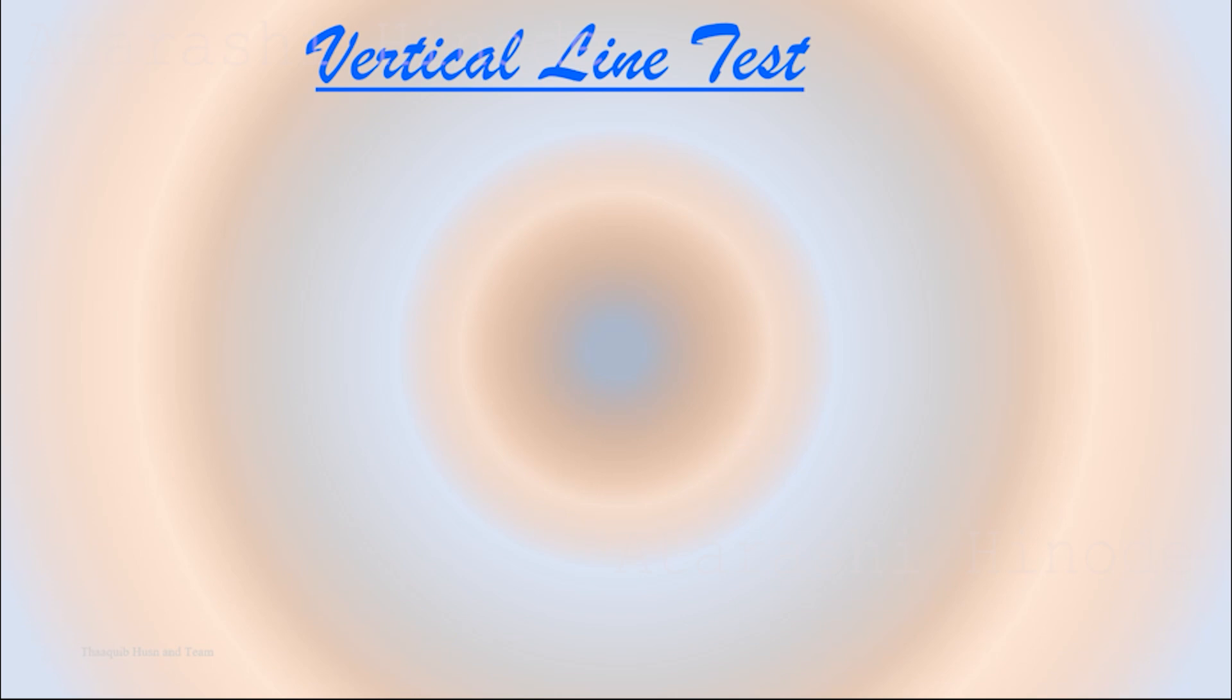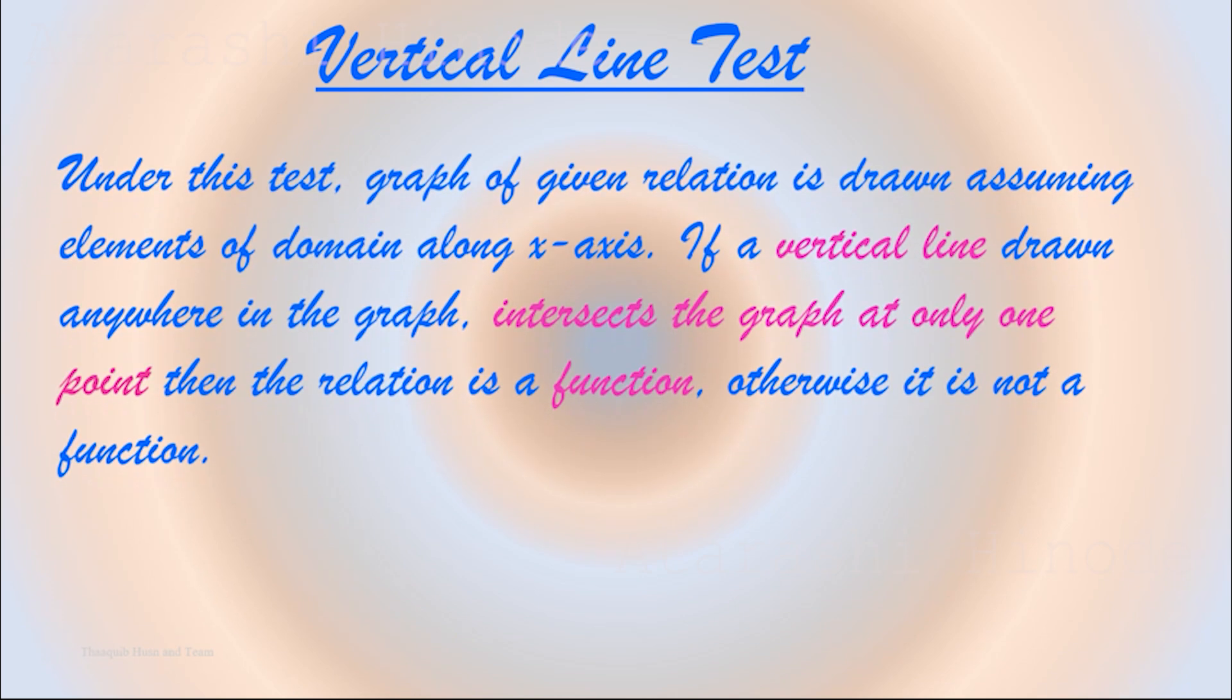If you are given a graph of a relation, how will you recognize whether it is a function or not? We can do so by the vertical line test. What is a vertical line test? Under this test, the graph of the given relation is drawn assuming elements of domain along the x-axis.